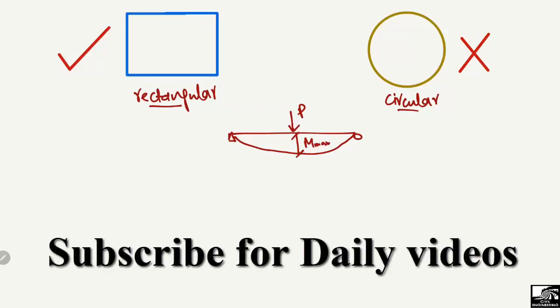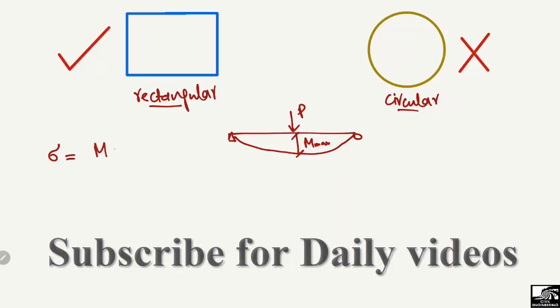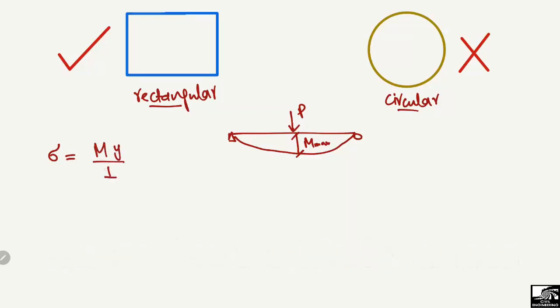If you look at the bending stress equation, bending stress is equal to M·Y divided by I. I hope you know this equation — bending stresses equal to M·Y divided by I — where M is the bending moment, Y is the distance from the neutral axis, and I is the moment of inertia.